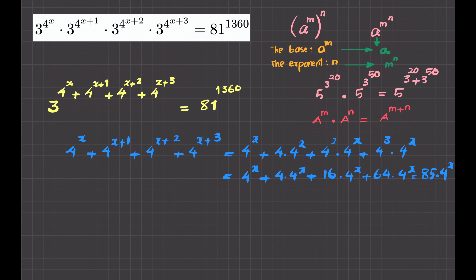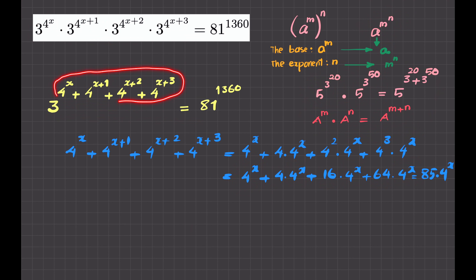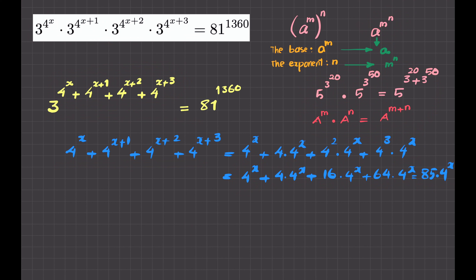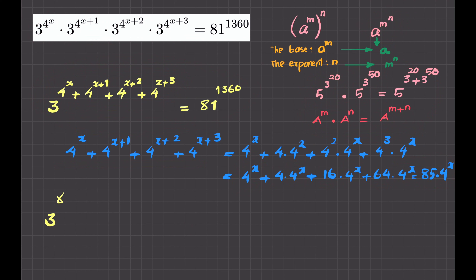So it is 85 times 4 to the x. That is the skill to learn. We reduced this problem using our understanding of the rule, and simplified the exponent to get 85 times 4 to the x. So going back to the problem, I write 3 to the power of 85 times 4 to the x on the left-hand side. On the right-hand side, 81 is 3 to the power of 4, so I write 3 to the power of 4 to the power of 1360.